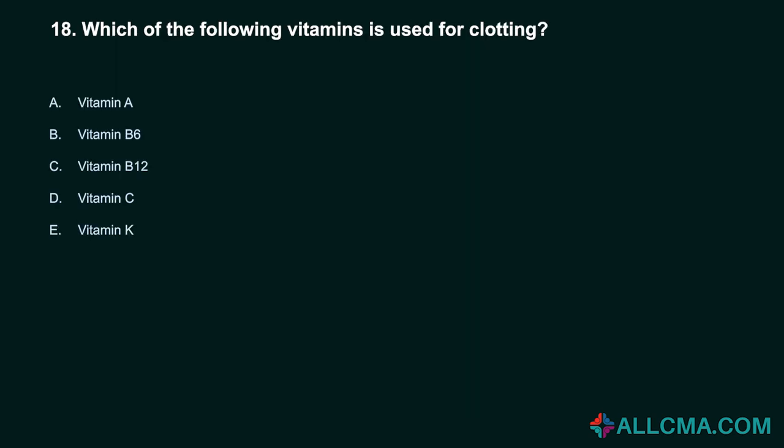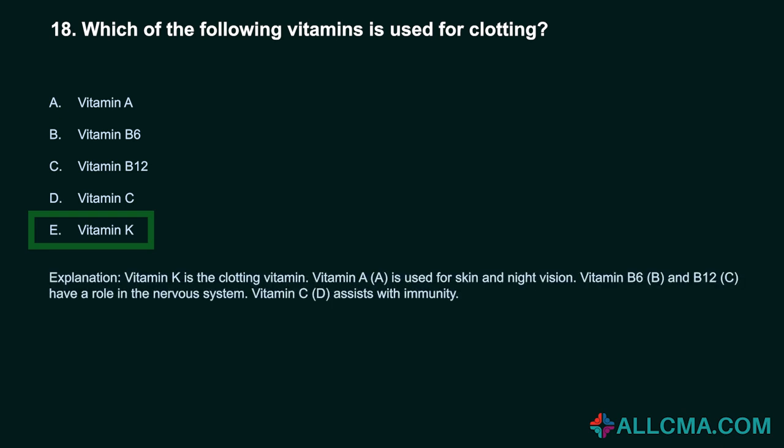Question 18: Which of the following vitamins is used for clotting? a) vitamin A, b) vitamin B6, c) vitamin B12, d) vitamin C, e) vitamin K. Correct answer: E, vitamin K. Vitamin K is the clotting vitamin. Vitamin A is used for skin and night vision. Vitamin B6 and B12 have a role in the nervous system. Vitamin C assists with immunity.